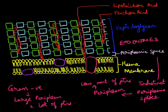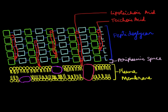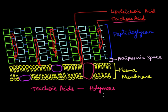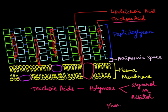The cell wall is also observed to contain a large number of teichoic acids. Teichoic acids are also polymers — specifically, polymers of glycerol or ribitol units joined together by phosphate groups.